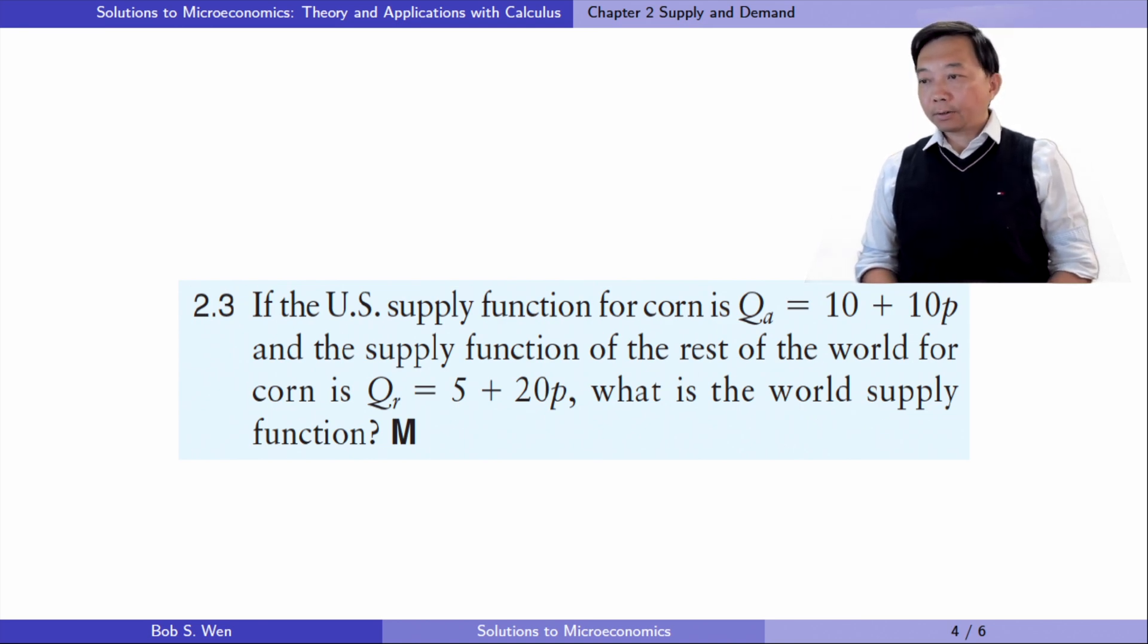Let's look at exercise 2.3. If the US supply function for corn is QA equals 10 plus 10 times P, and the supply function for the rest of the world for corn is QR equals 5 plus 20 times P, what is the world supply function?